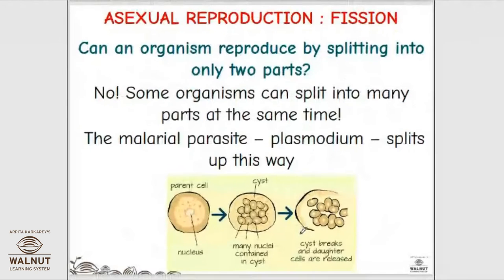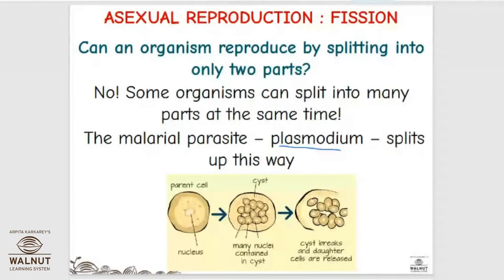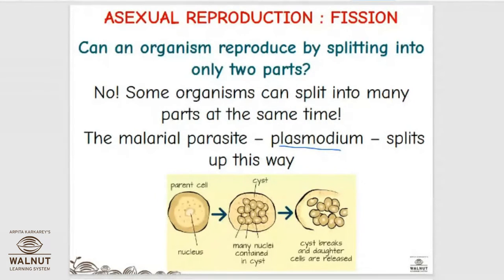Here you can see the example of the malarial parasite, Plasmodium. Plasmodium causes malaria, which is spread by the mosquito. Plasmodium reproduces by fission, but here one cell multiplies into many — so this is called multiple fission. Binary fission produces two cells; multiple fission produces many.